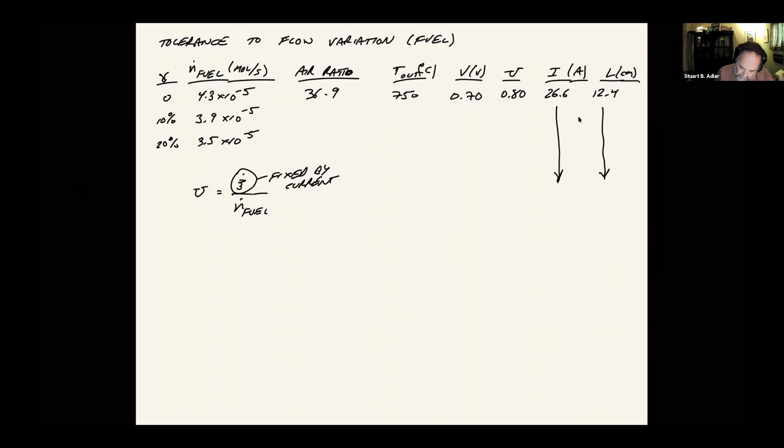For 3.9 times 10 to the minus 5, divide that by 4.3, take the reciprocal, and that's going to give us a utilization of 0.88. And then at 3.5 times 10 to the minus 5, it's about 98% utilization.